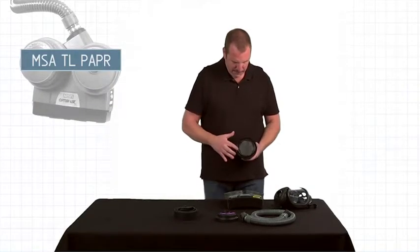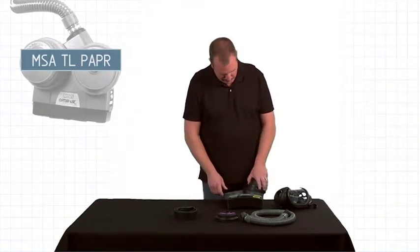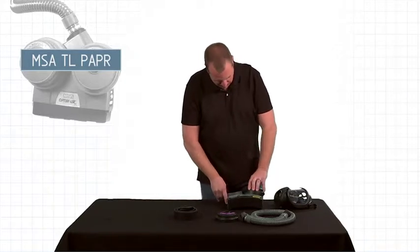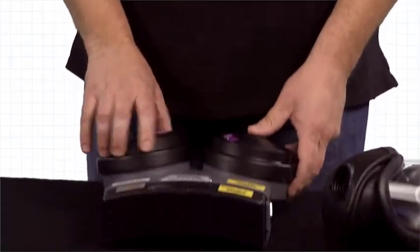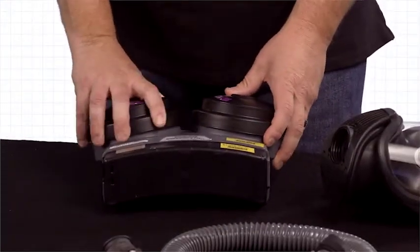After you've checked the battery, look at the cartridges and inspect the O-rings. Install the cartridges by laying the unit flat and placing a cartridge on top and turning counterclockwise until it drops into place. Hand tighten until snug.